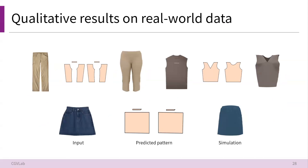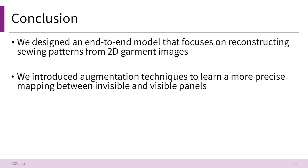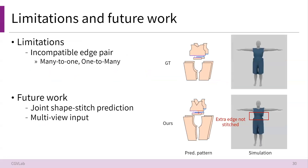Here are some sewing patterns we reconstructed from real-world images. In conclusion, we designed an end-to-end model that focuses on reconstructing sewing patterns from 2D garment images. We introduced augmentation techniques to learn a more precise mapping between invisible and visible panels. However, our model occasionally predicts incompatible edge pairs as shown in the figure. We plan to develop a model that can jointly predict both the shape and stitch of sewing patterns to deal with this issue. We are also interested in utilizing multi-view images as input to make our model more robust. Thank you.